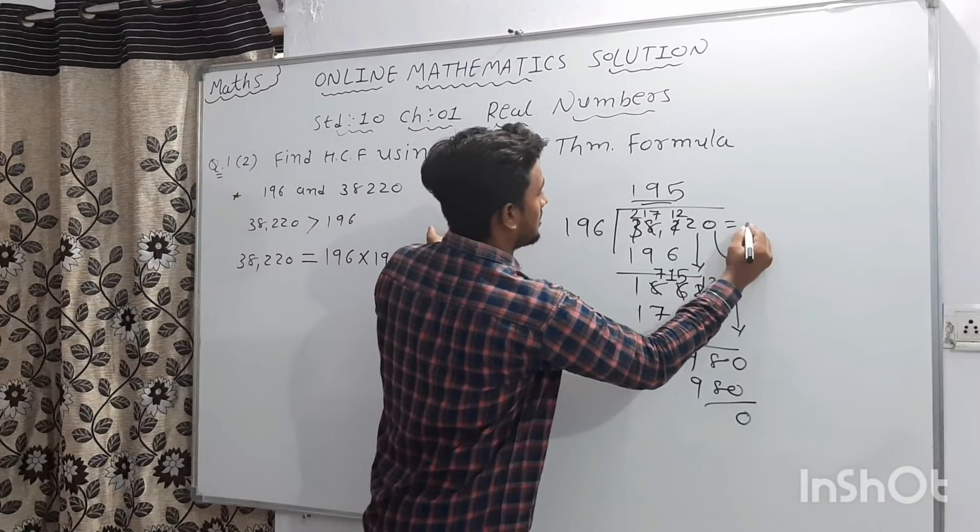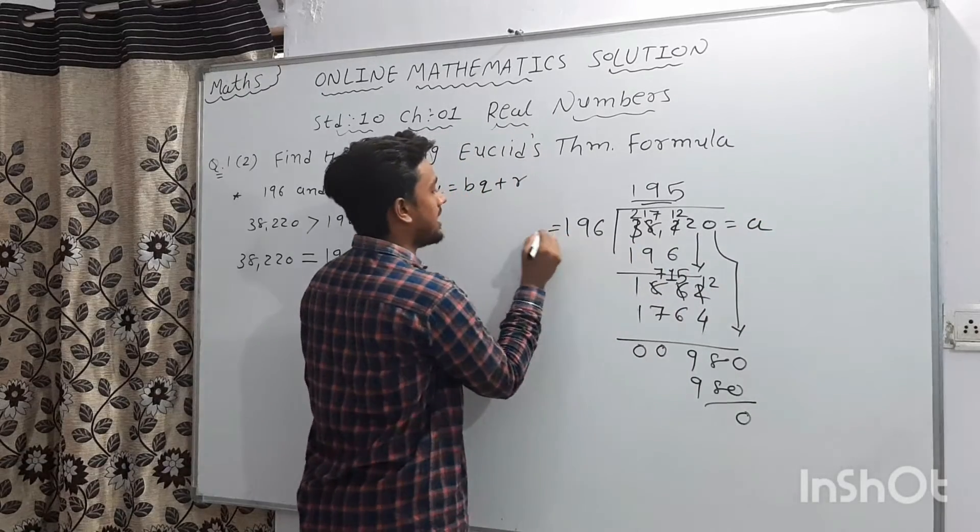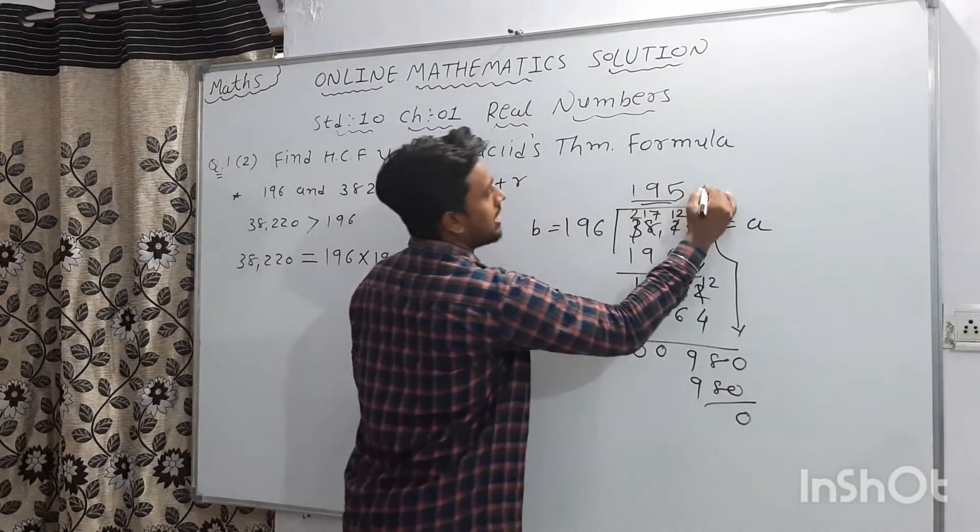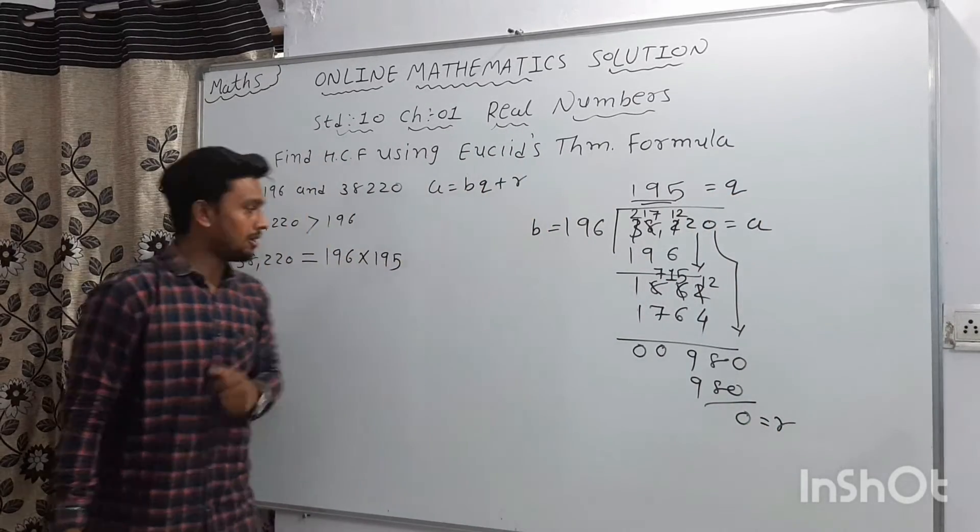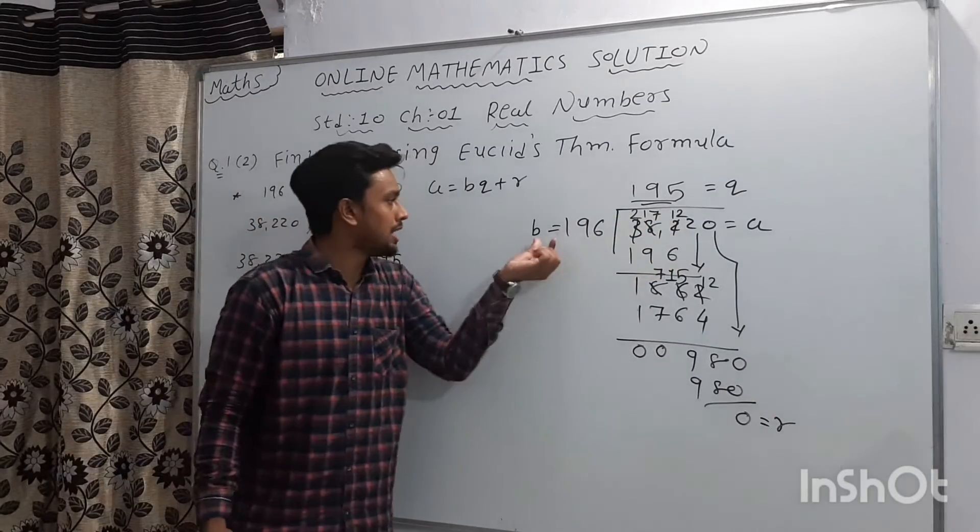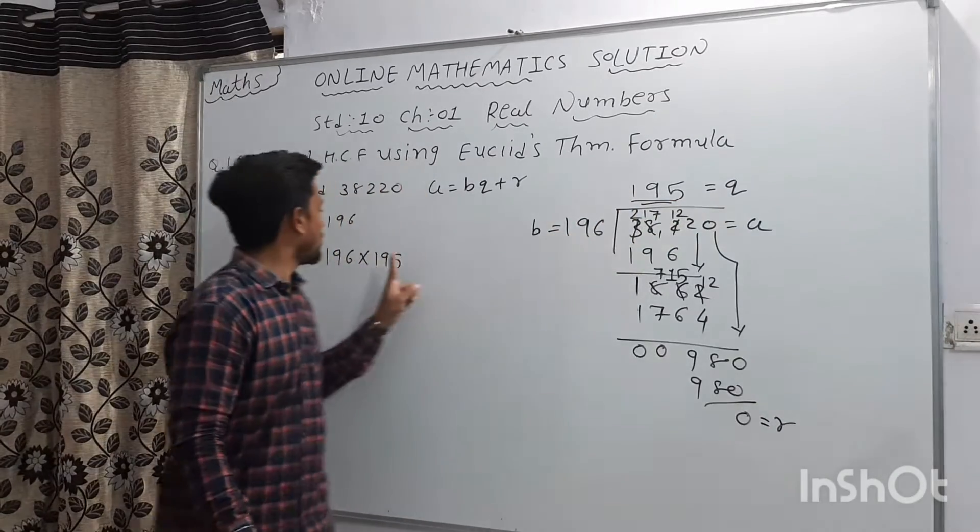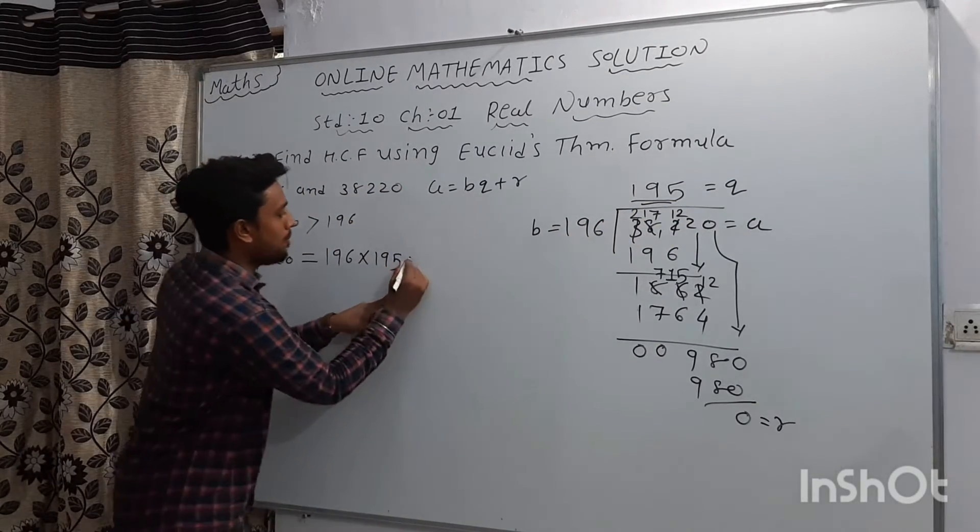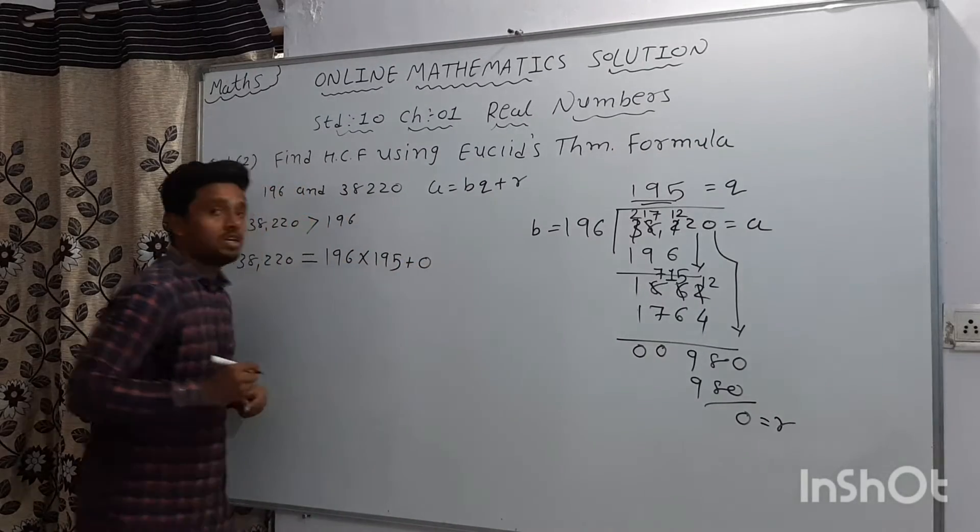we should write 38,220 is equal to A, 196 is equal to B, 195 is equal to Q, and 0 is equal to R. So here, A is equal to 38,220, B is equal to 196, Q is equal to 195, plus the remainder R is equal to 0.